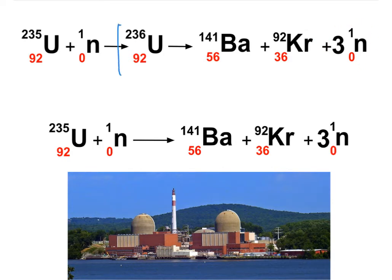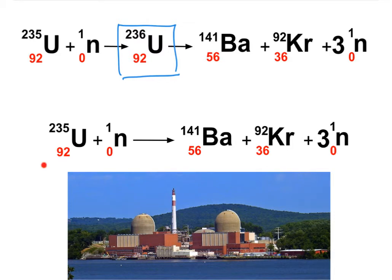This stage of the uranium-236 isotope is very short-lived — it exists for a split second, even less than that. So we can omit it from our equation altogether. Practically, we're firing a neutron into uranium-235, initiating the split of this big nuclei into two smaller nuclei of barium-141 and krypton-92, and three neutrons released in the process. This kind of reaction, when a big nuclei splits into smaller ones, is called fission.